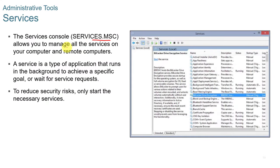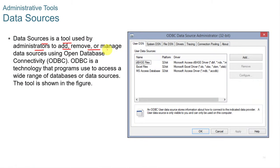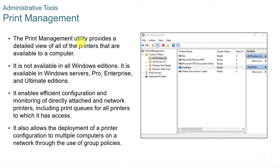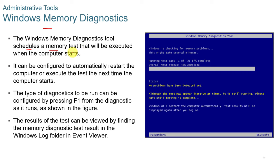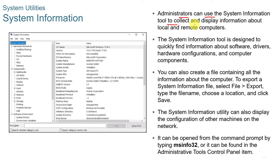Services (services.msc) allows you to manage all services on your computer and remote computers. Data Sources is a tool to add, remove, and manage data sources using ODBC (Open Database Connectivity), a technology that programs use to access a wide range of databases. The Print Management Utility provides a detailed view of all printers available to a computer; it's available in Windows Server, Pro, Enterprise, and Ultimate editions. Windows Memory Diagnostics schedules a memory test executed at startup. System Information allows administrators to collect and display information about local and remote computers, helping to quickly find information about software, drivers, hardware, and components.